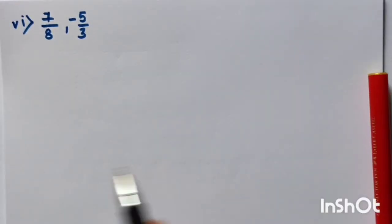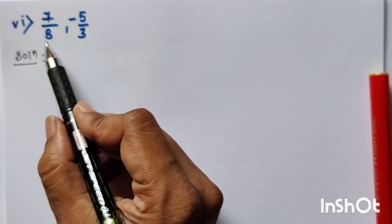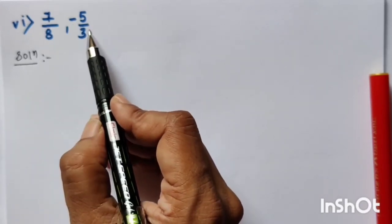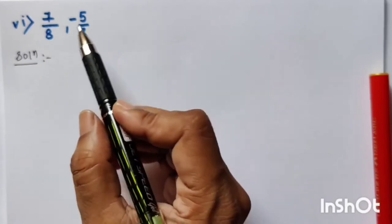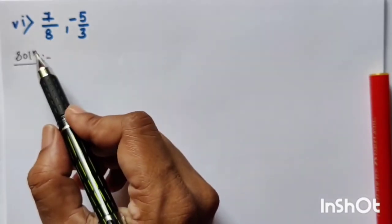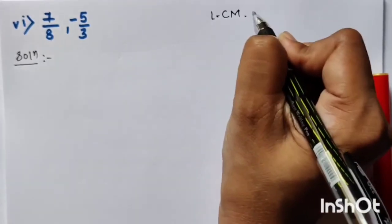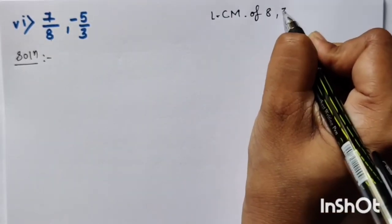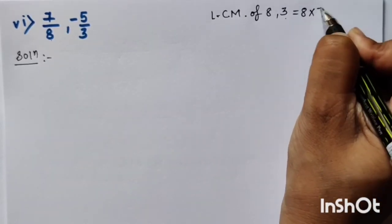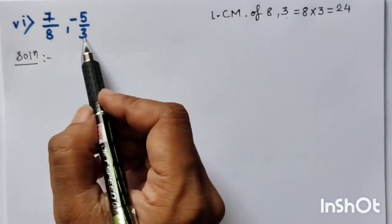Again, we have to find the solution for two numbers where one is positive and the second is negative, and the denominators are not equal. We have to equalize the denominator by finding the LCM of 8 and 3. Between 8 and 3 there is no common factor. So we multiply: 8 × 3 = 24. LCM of 8 and 3 is 24.